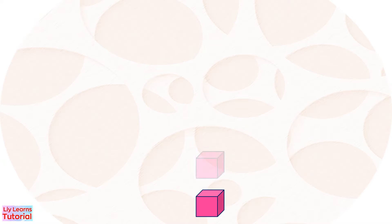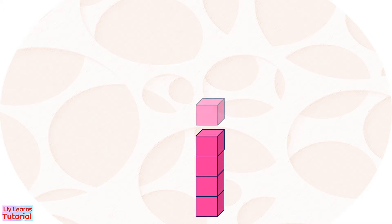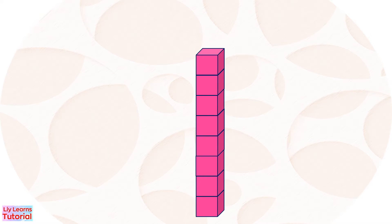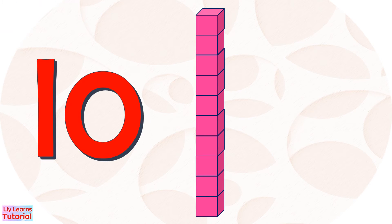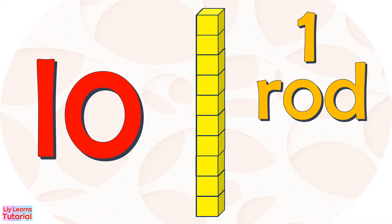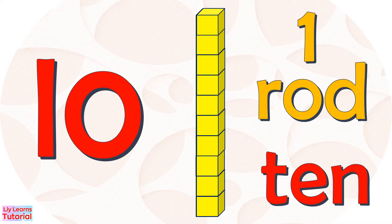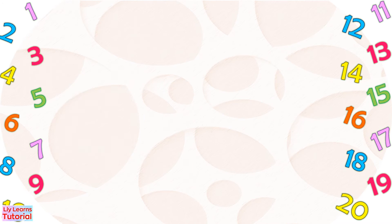Let's count the blocks. 1, 2, 3, 4, 5, 6, 7, 8, 9, 10. There are 10 blocks. We can also say this is one rod. When we count by tens, we say 10 for one rod, because each rod is equal to 10 units or 10 blocks.